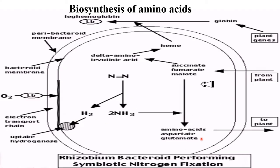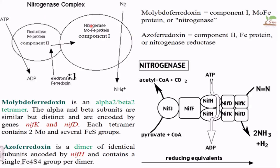This picture shows a Rhizobium bacteroid performing symbiotic nitrogen fixation. The nitrogen is converted into ammonia, which is then utilized for the production of amino acids like aspartate and glutamate. These amino acids are transferred to the plant. In turn, the plant provides succinate, fumarate, and malate, which are utilized for the production of heme. This heme combines with the globin protein provided by the plant to form leghemoglobin. In this way, the Rhizobium bacteroid performs symbiotic nitrogen fixation.